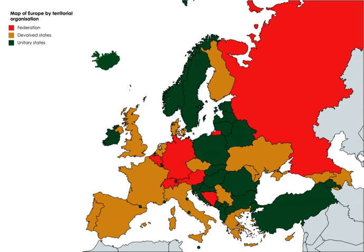The UAE is a federal absolute monarchy of the six ruling families of the United Arab Emirates, with the Emir of each Emirate being an absolute monarch and the Emir of Abu Dhabi being also the president of the UAE.